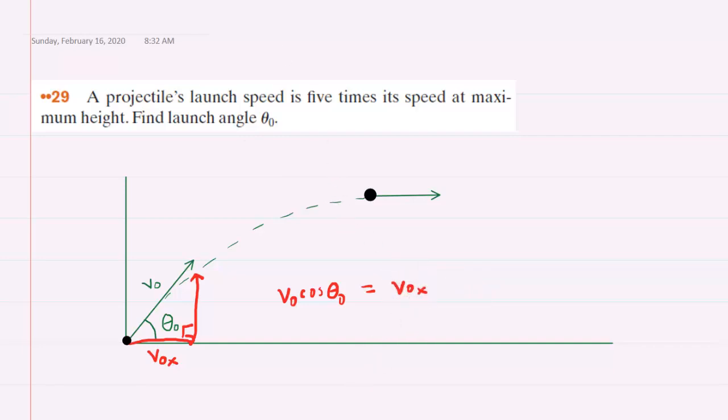The reason that's important is because over here at the maximum height we can see that the velocity is pointing exclusively in the horizontal direction. There is no velocity component either downward or upward at the maximum height. So that would mean that this velocity that points to the right would be the same as this velocity that we just found.